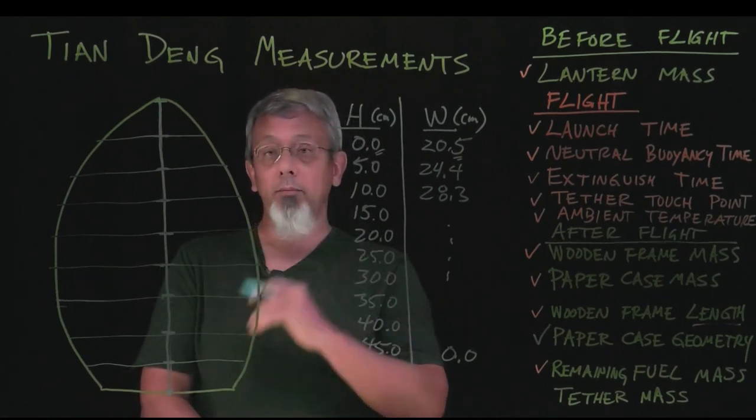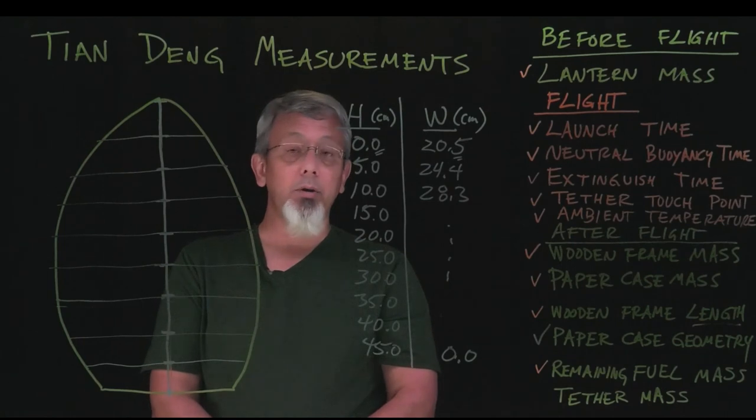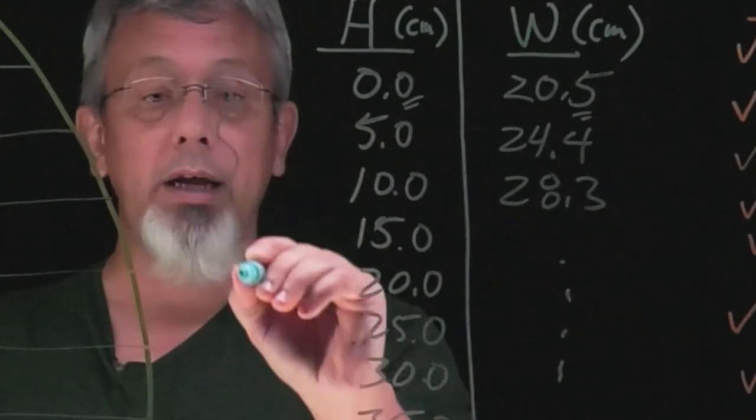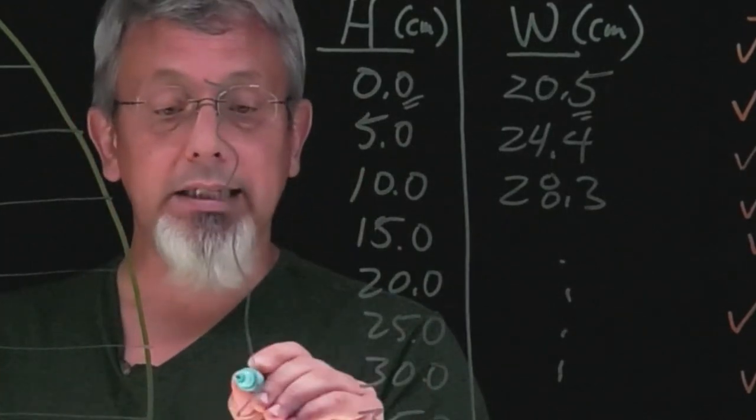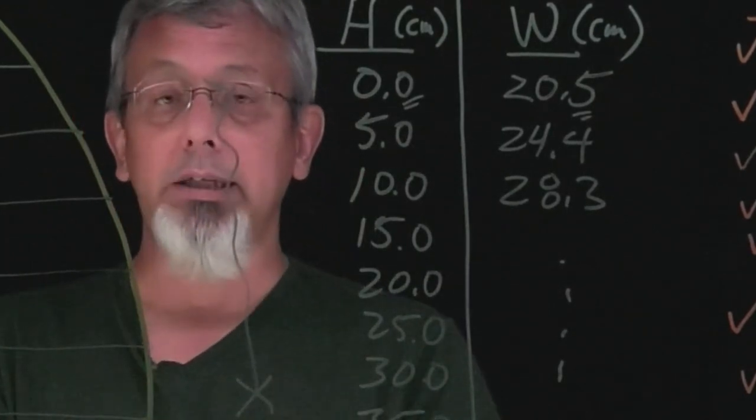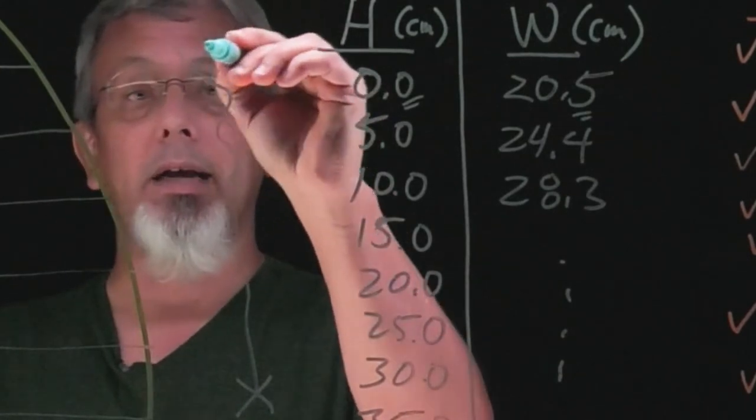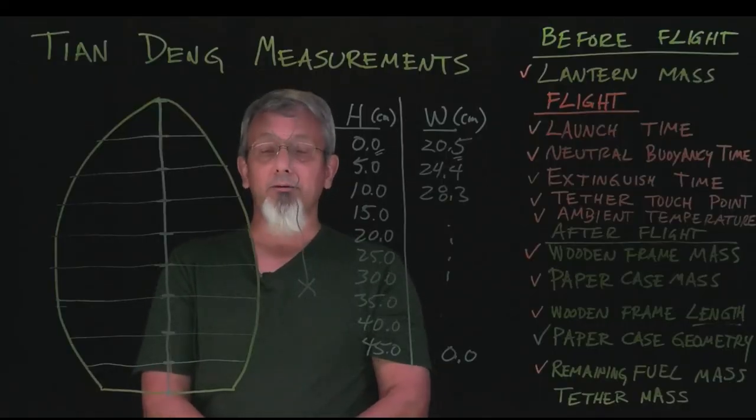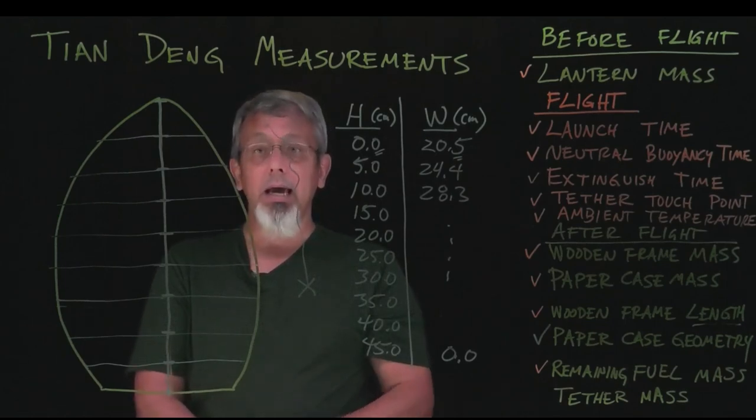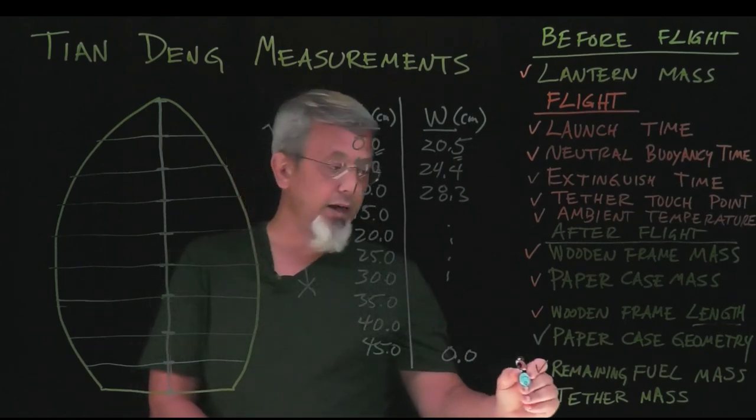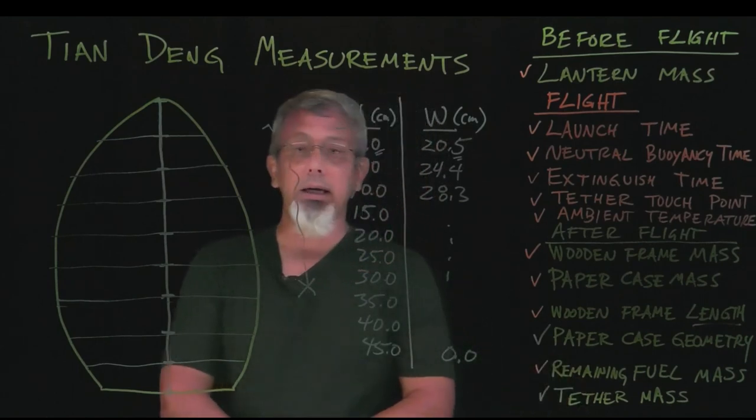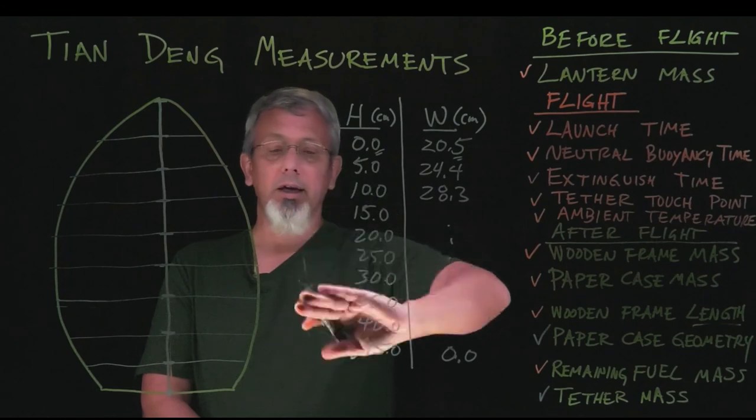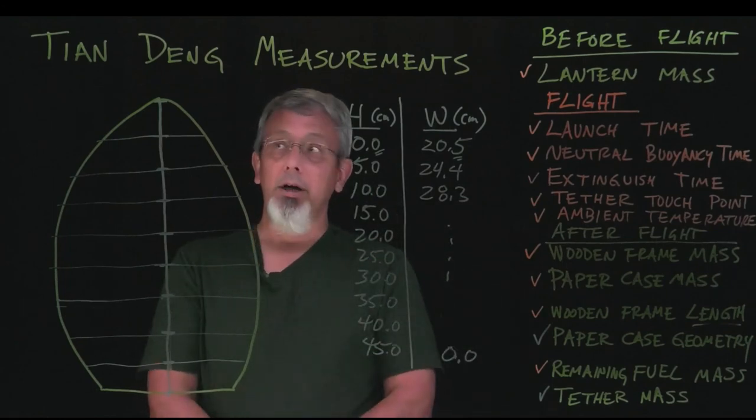And then there's one more thing you have to measure before you're done with measurements, and that will be the mass of the tether. So that long string that you had there, you'll take a scissors and cut it off wherever you marked it. You will separate it as well with the connecting mechanism from the lantern. It will have already been separated from the lantern. And you take that and find the mass of that. And that would be the last piece you would need to have all the information you need for a successful analysis of the Tian Deng.